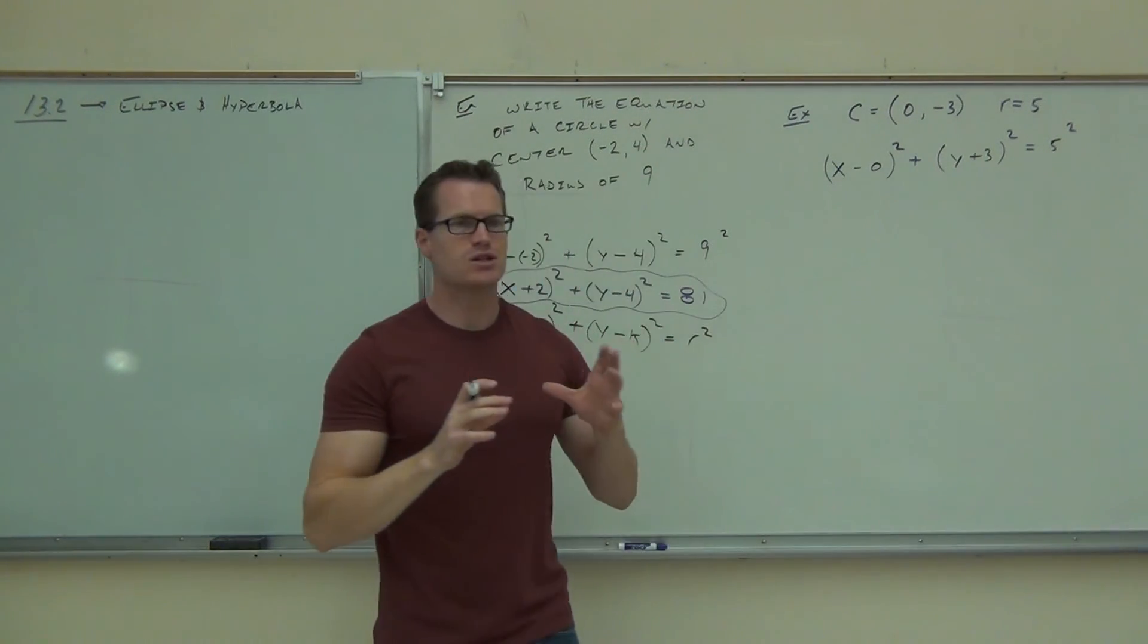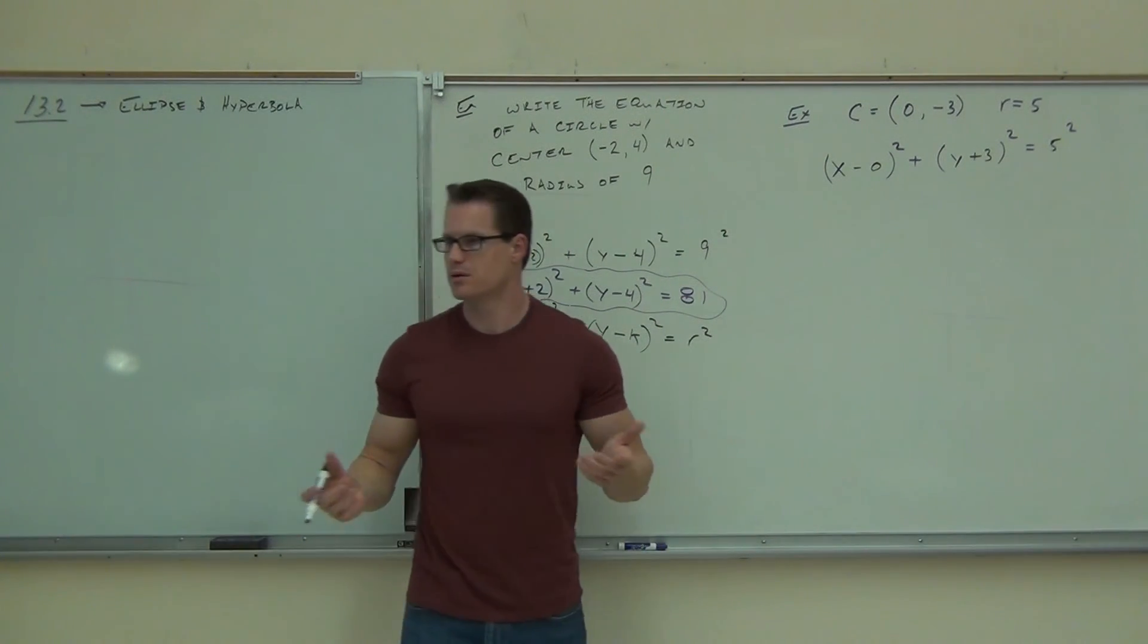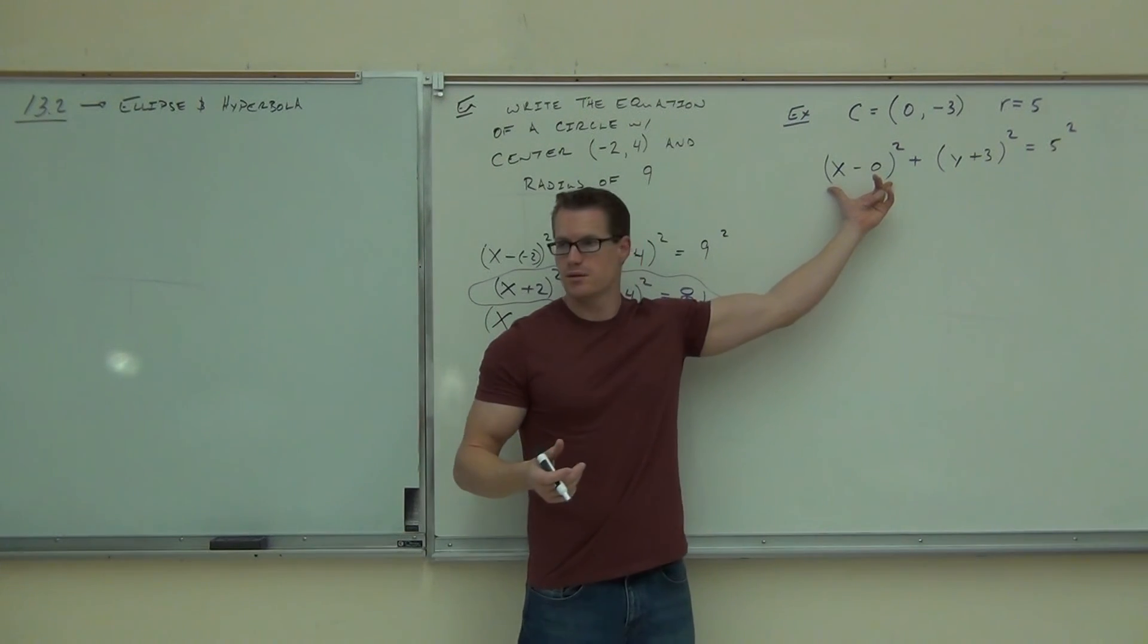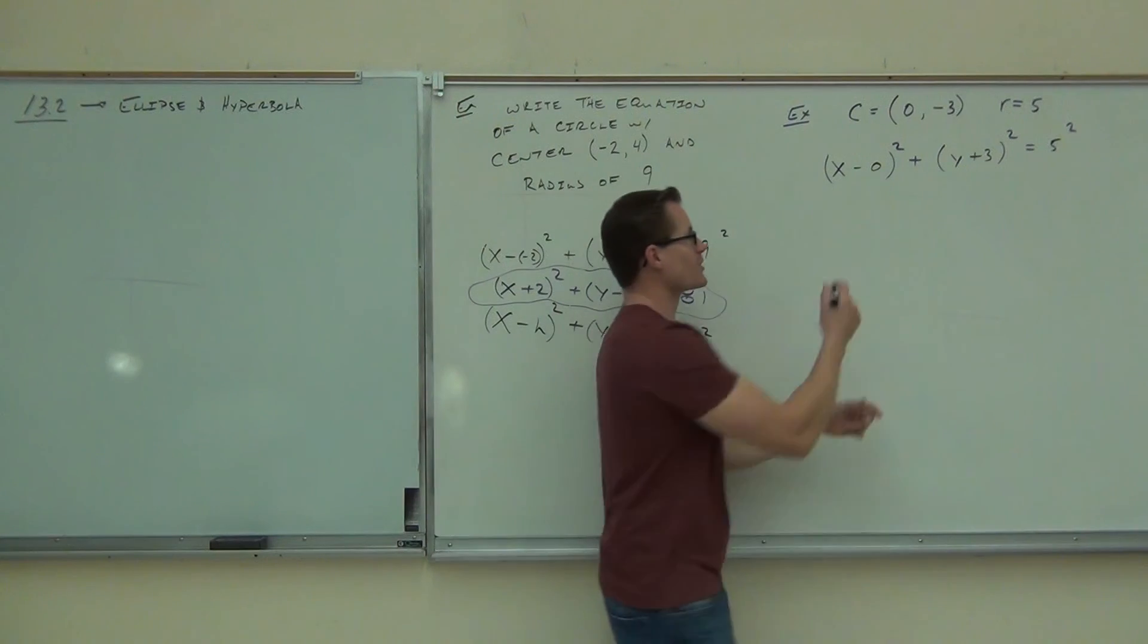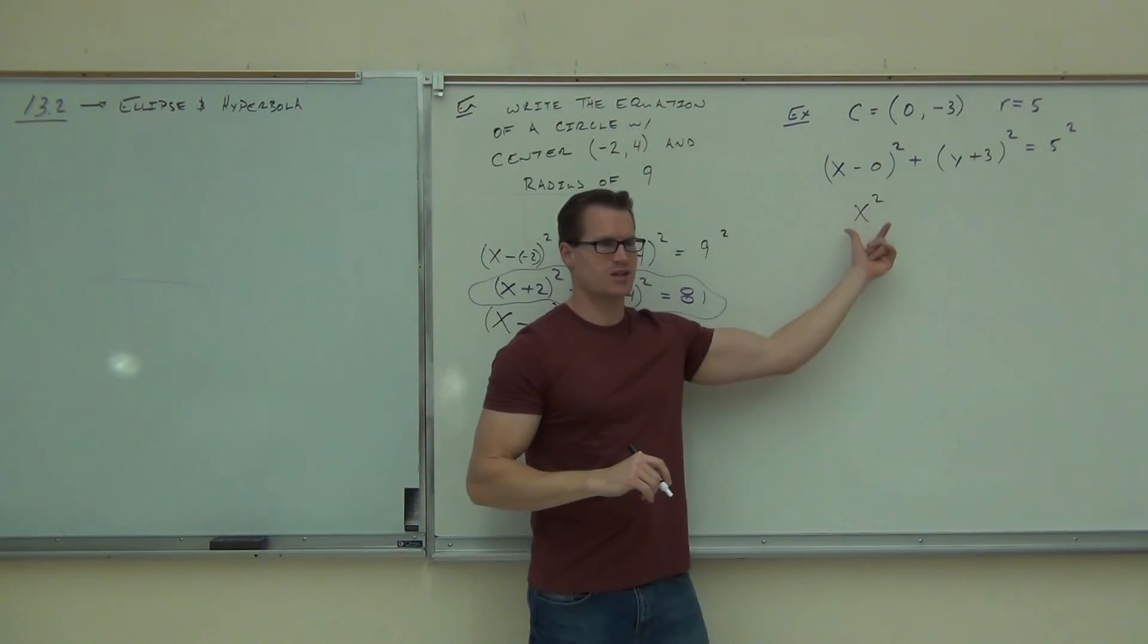So plug that into the formula first and then simplify what you can. x minus zero. Well, how much is x minus zero? Zero. X minus zero is? X minus zero is? X. And then we square it. So this whole thing, don't leave it as x minus zero. Write it a little bit more, more, write it more better. X squared. Write it simpler than that. So x minus zero, that's x. If we square it, we're going to get x squared. You okay that that is actually x squared?